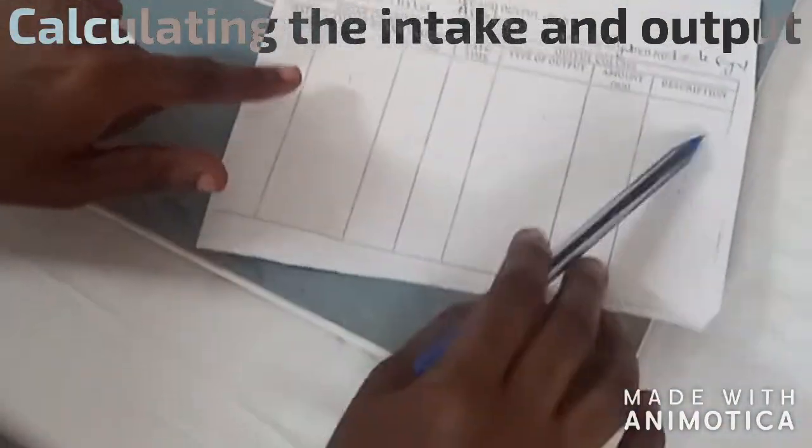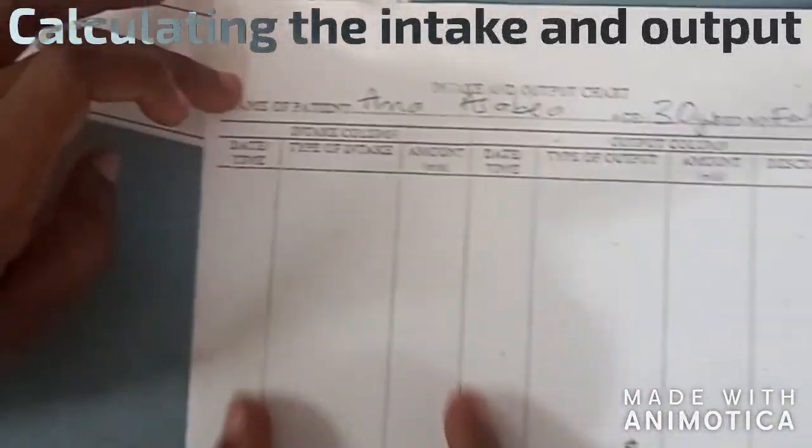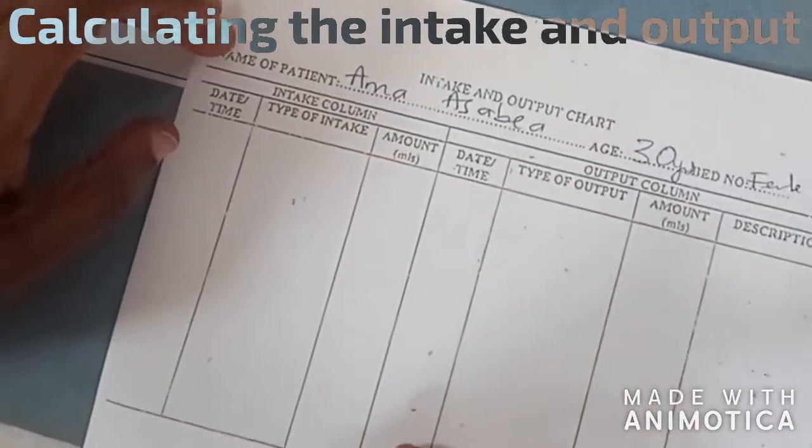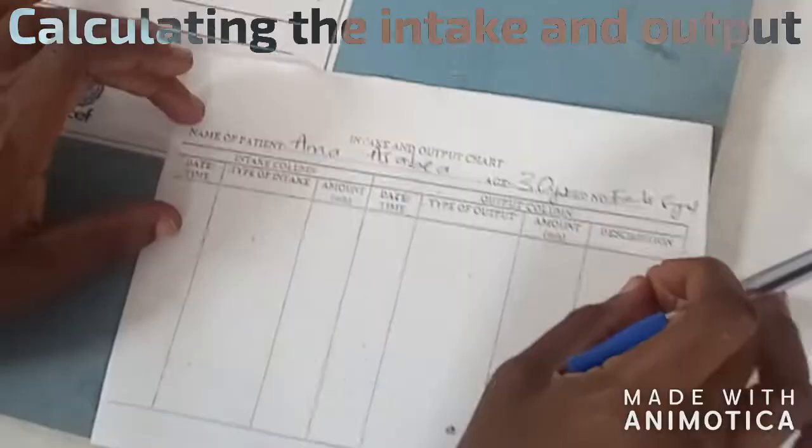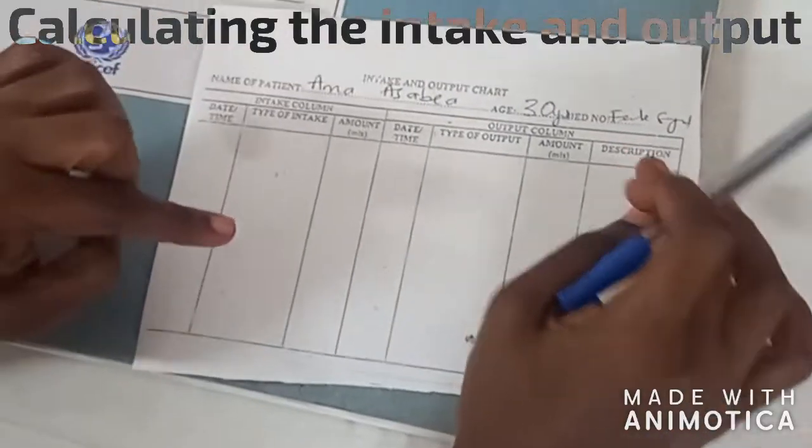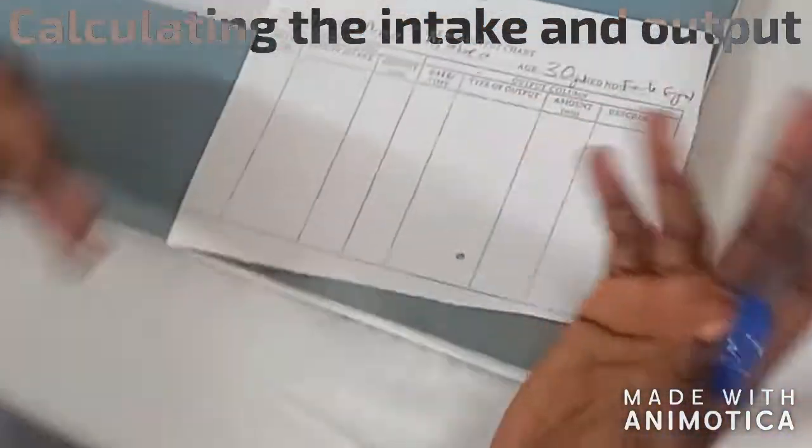If you see the columns, you have this whole place is for intake and this whole place is for output, and there's a description. One instance is to describe how the output is or how the intake is.